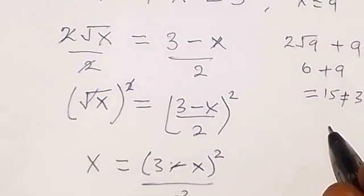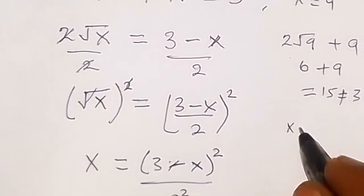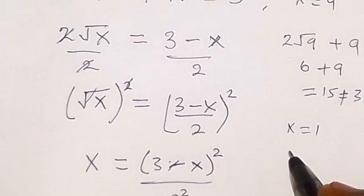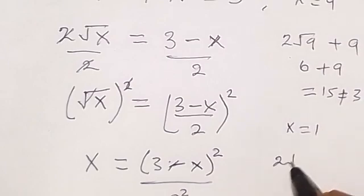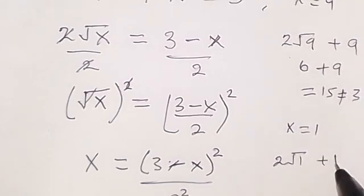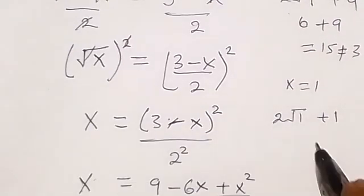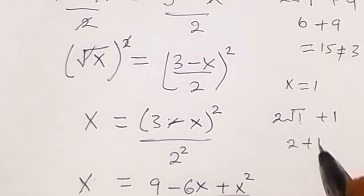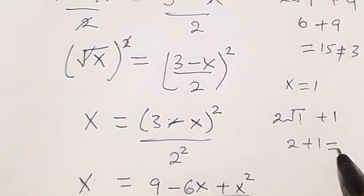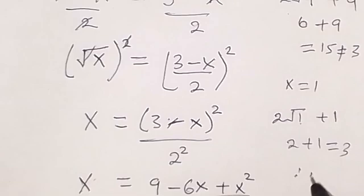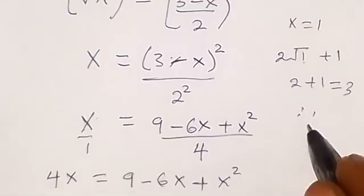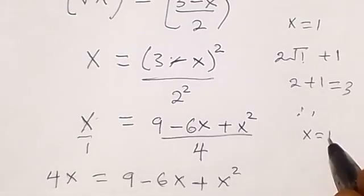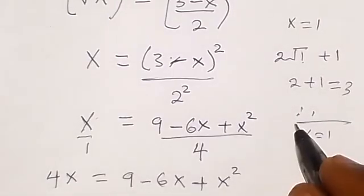Now let's test x equals 1. We have 2√1 plus 1. Root 1 is 1, so 1 times 2 is 2, and 2 plus 1 gives us 3. This gives us 3, so therefore x equals 1 is our solution.